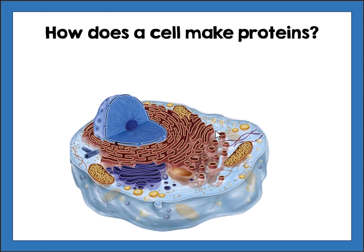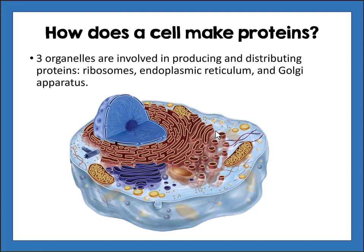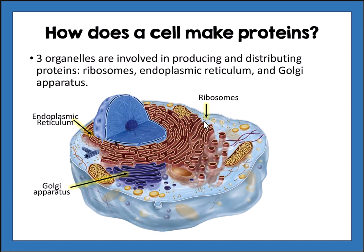How does a cell make proteins? There are three organelles involved in producing and distributing proteins: ribosomes, the endoplasmic reticulum, and the Golgi apparatus. Ribosomes are very small and are also found in prokaryotic cells. The endoplasmic reticulum is much larger, connected to the nucleus, and the Golgi apparatus has a similar stacked shape on the outside of the endoplasmic reticulum.